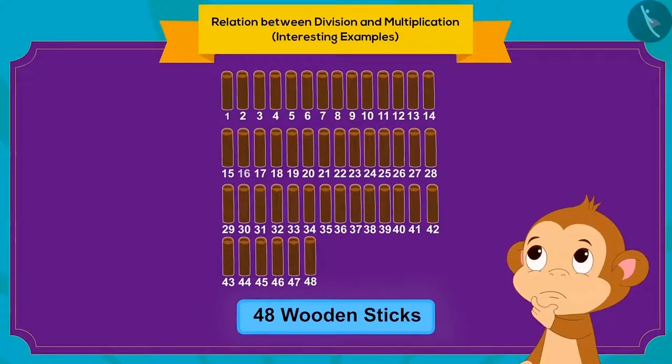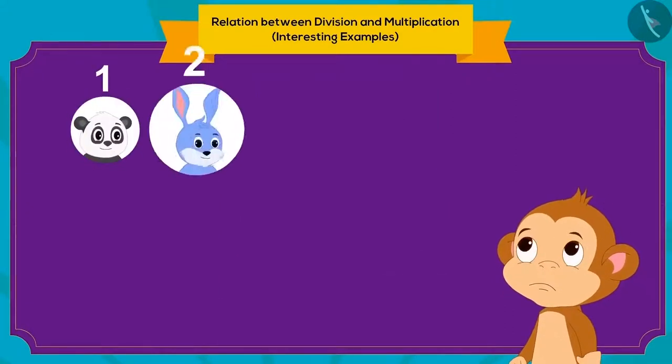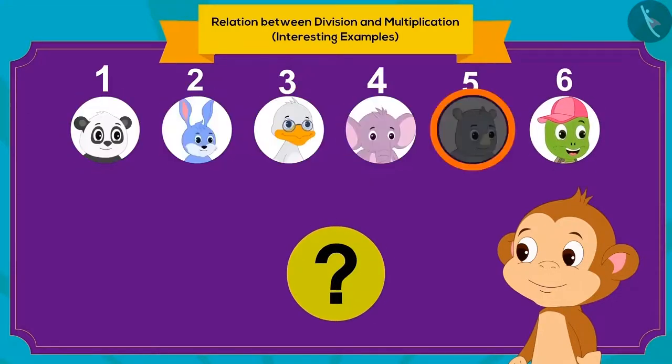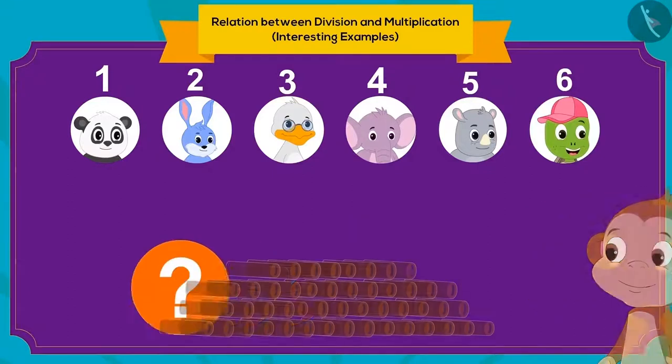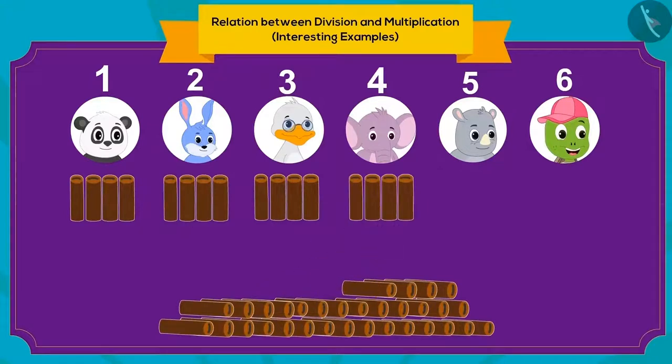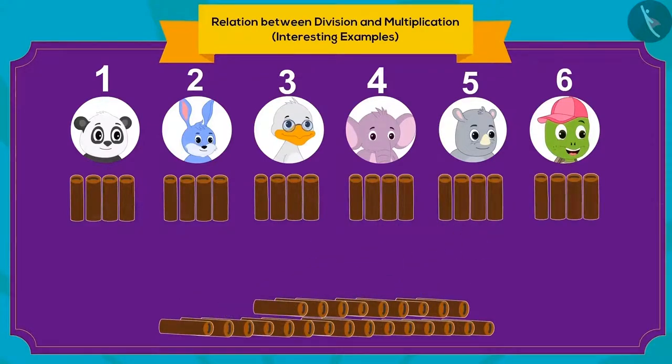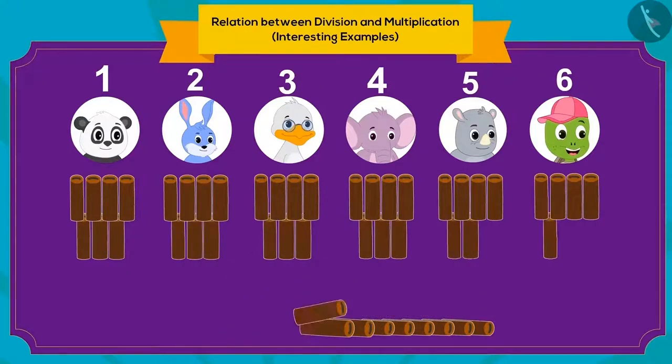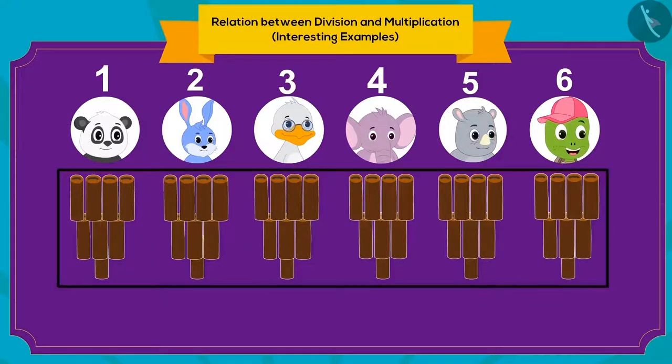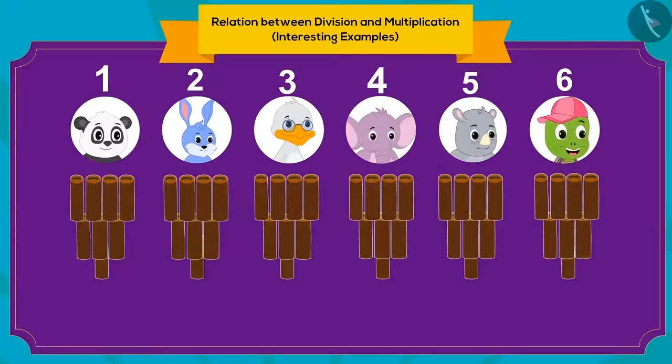He thought that he would divide these equally among his six friends. Can you tell how many sticks will each friend get? To begin with, we can give four wooden sticks to each one of his friends. We can then further give them three sticks each. And finally, we can give one stick more to each friend. This way, we can make bundles of eight sticks to divide 48 sticks equally among six friends.